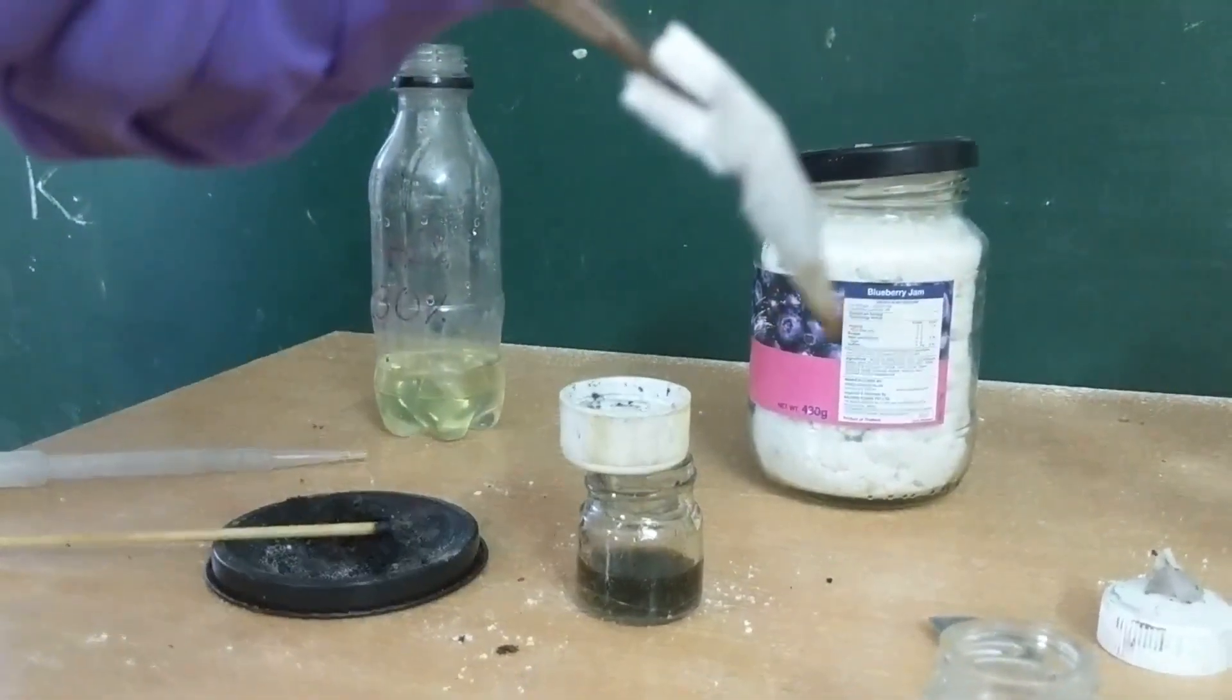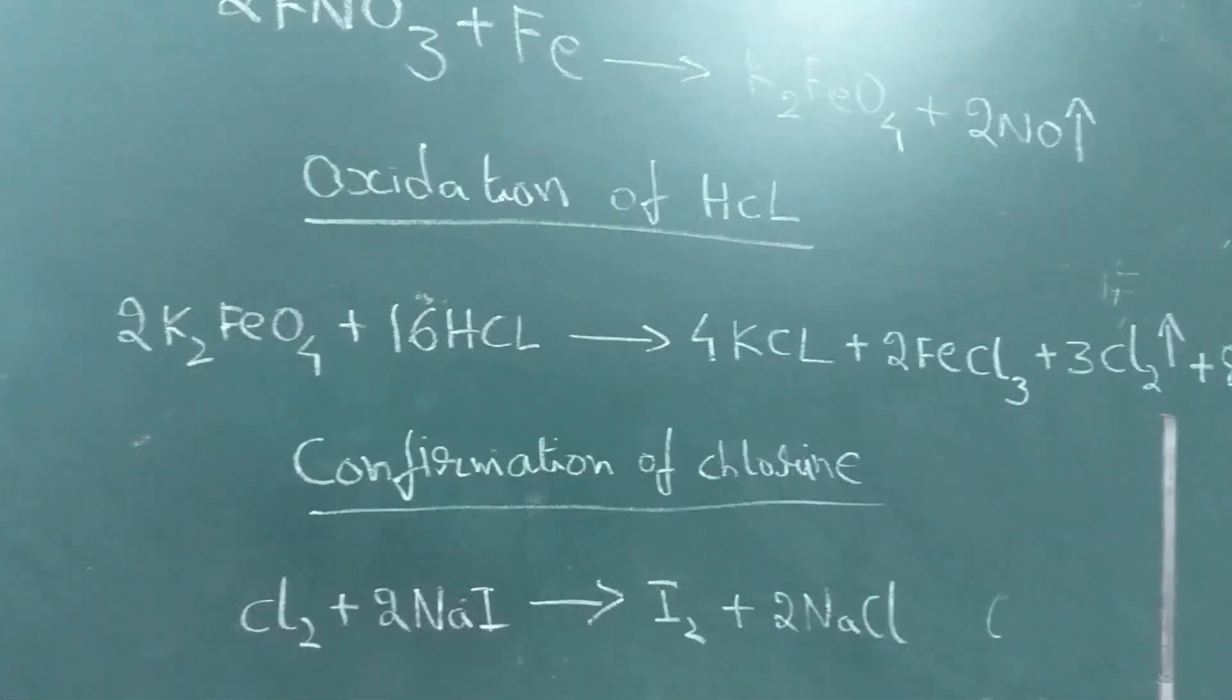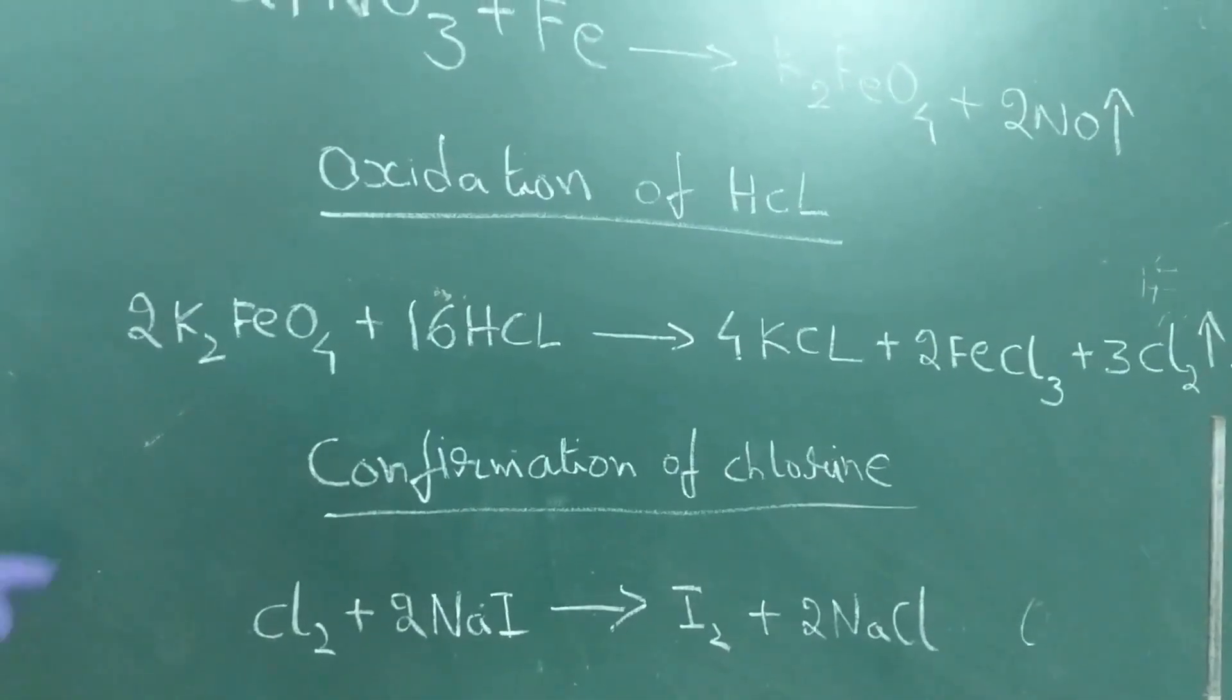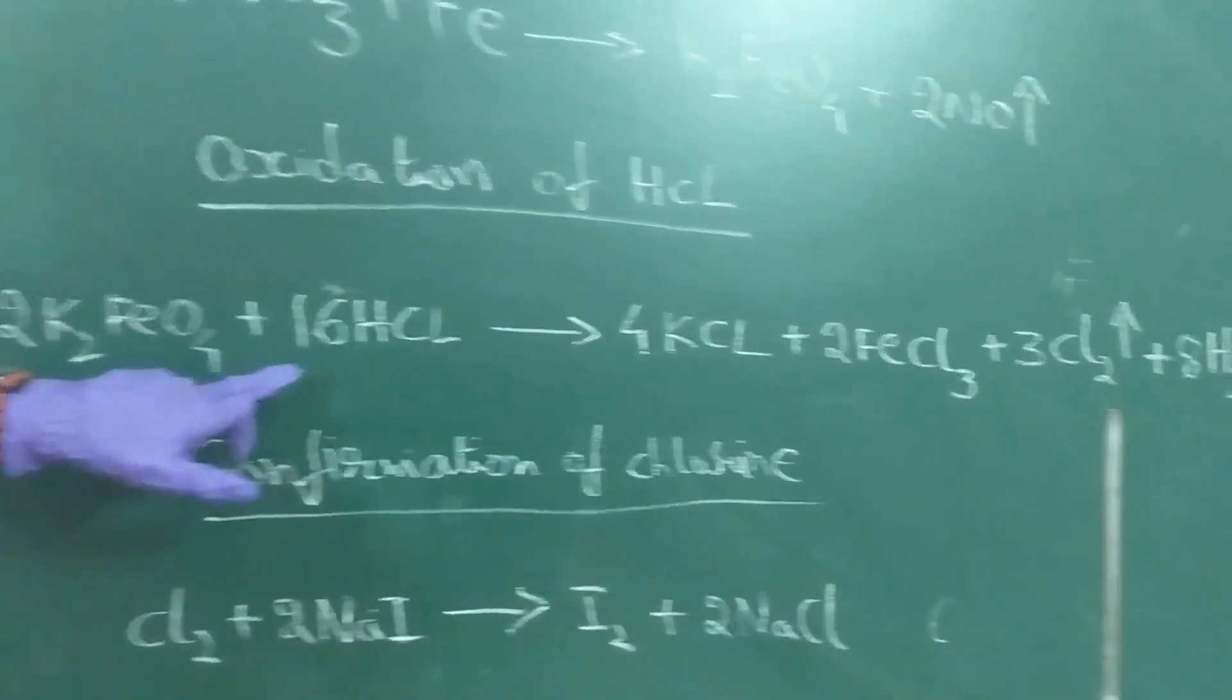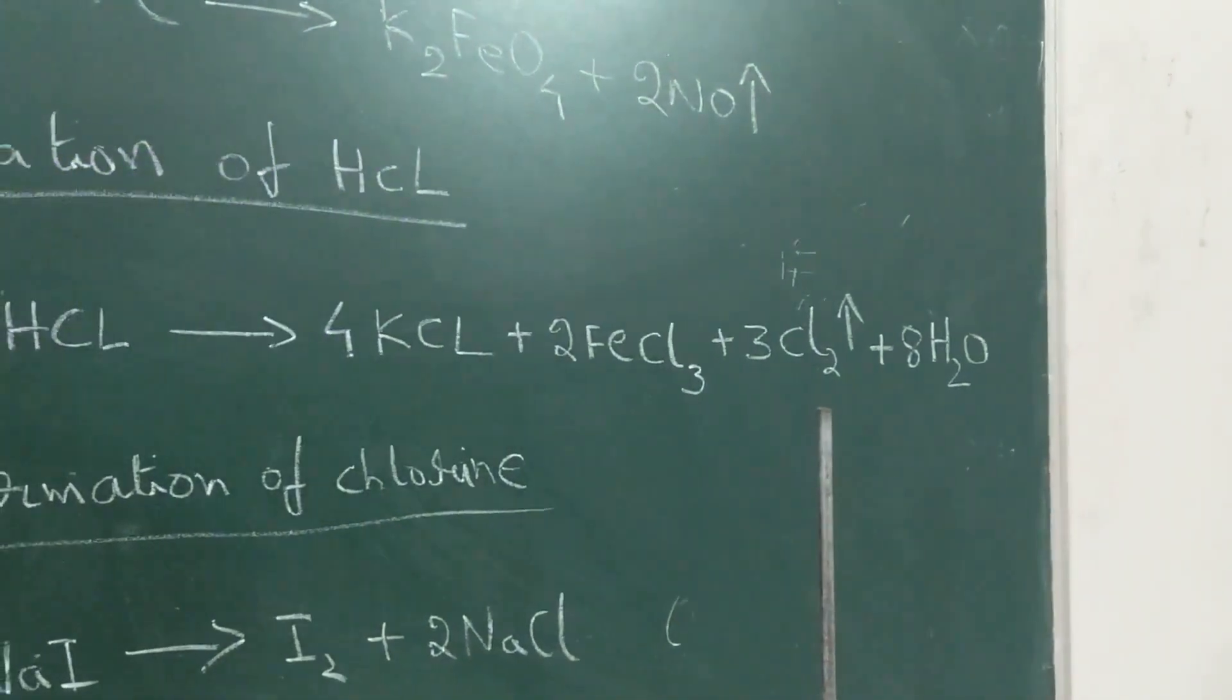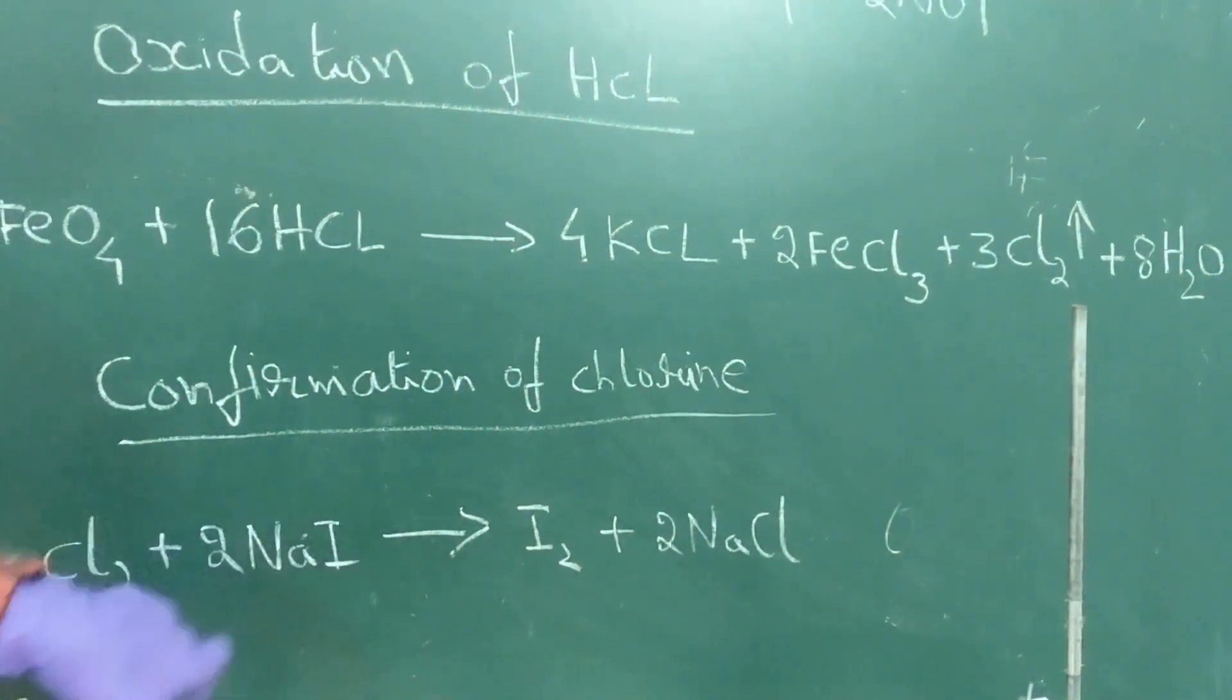As you can see, the tip of the paper has turned brown due to the liberated iodine. This proves the presence of ferrate in the given product. This is the oxidation of hydrochloric acid by potassium ferrate. It reacts with hydrochloric acid forming potassium chloride, ferric chloride, chlorine, and water. The chlorine is confirmed using sodium iodide solution, and there's a single displacement reaction wherein iodine is liberated, which turns the paper brown.